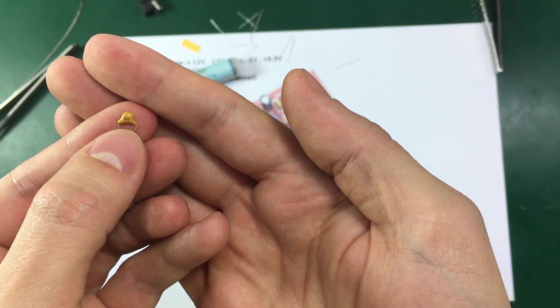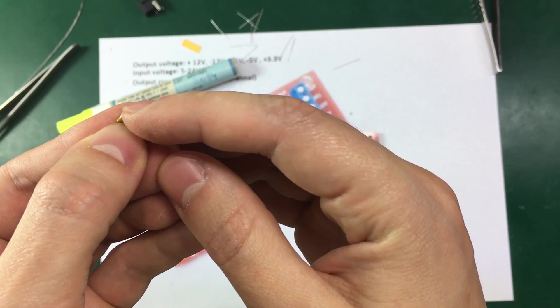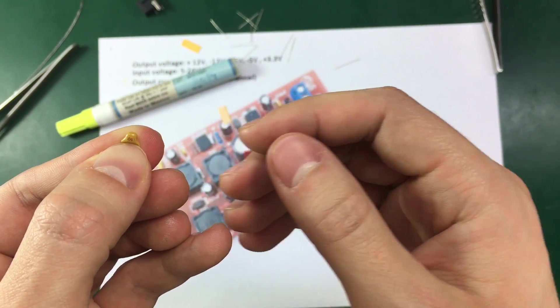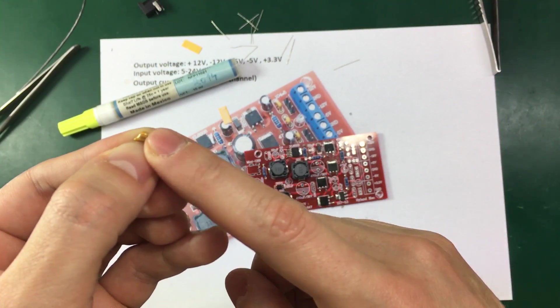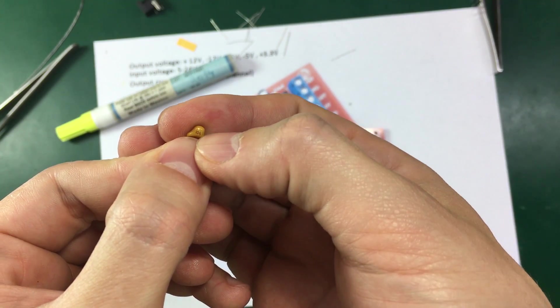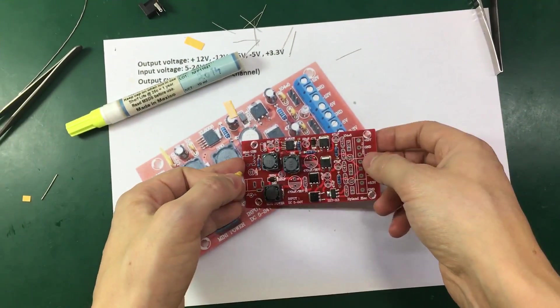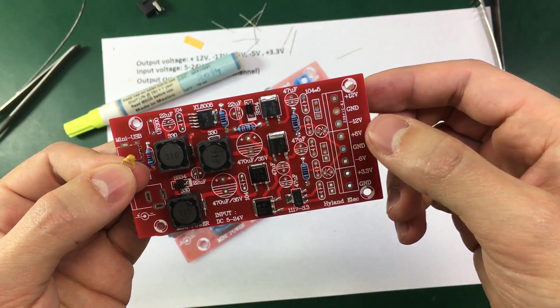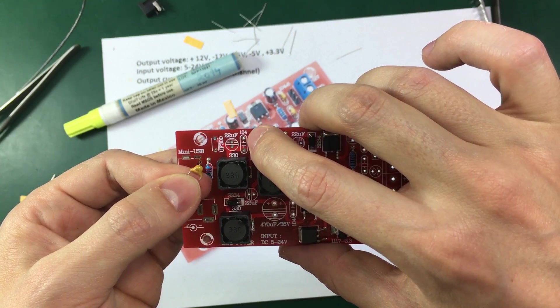Now for doing the ceramic capacitors. You do get the small markings on each capacitor. And you need to match that to the label on the PCB. For example this one is 100nF. It's marked 104. And we need to place it on the PCB in a spot where it's marked 104.